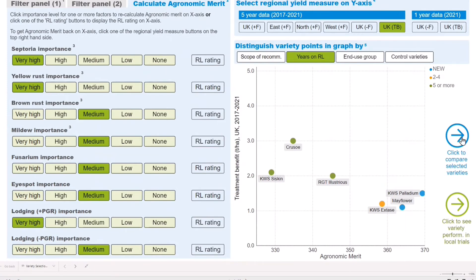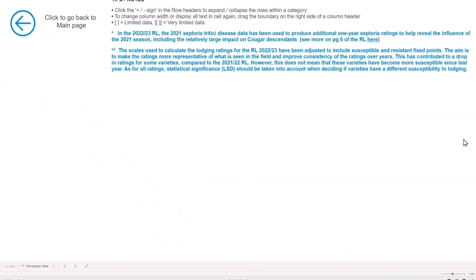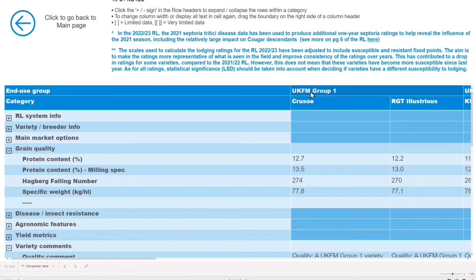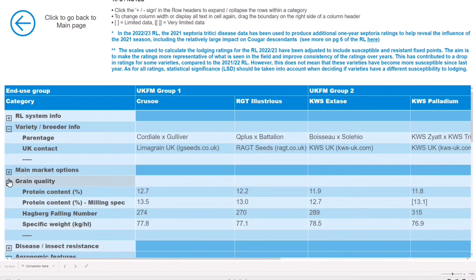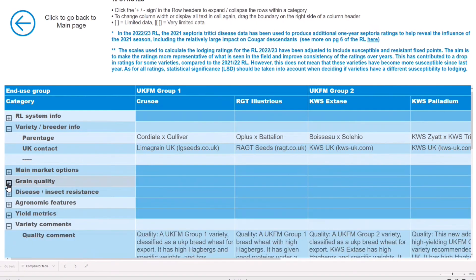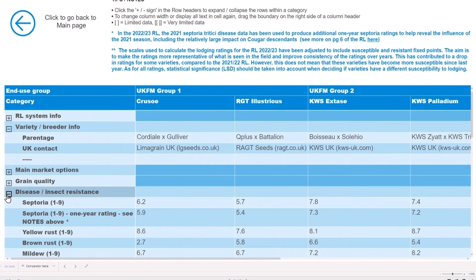Click the right-pointing blue arrow to compare the selected varieties side by side. You can expand or shorten the column widths to allow you to view the data easier. Use the positive and negative buttons to expand and collapse table rows for each category.